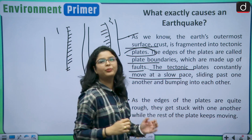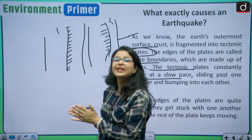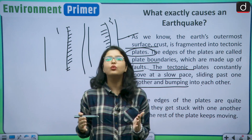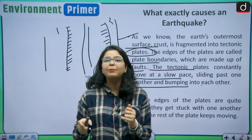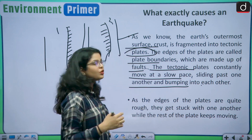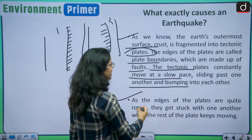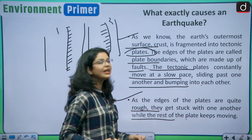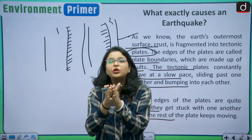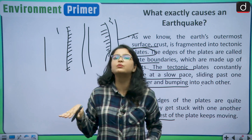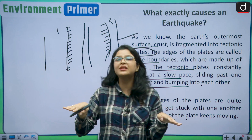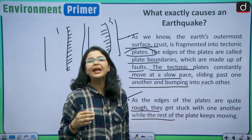The tectonic plates constantly move at a slow pace — they move and slide past one another, bumping into one another, hence causing earthquakes. As the edges of the plates are quite rough, they get stuck with one another while the rest of the plates keep moving. These rough edges, also known as plate boundaries, get stuck to one another, causing a fault as the plate continuously keeps moving.